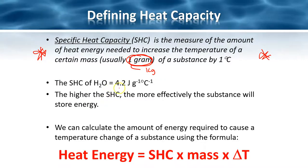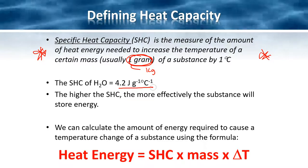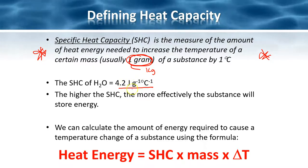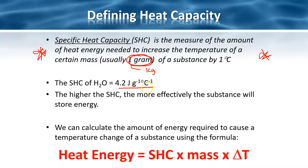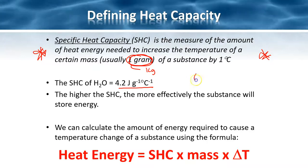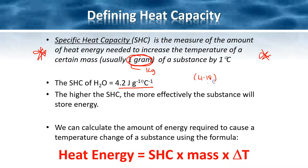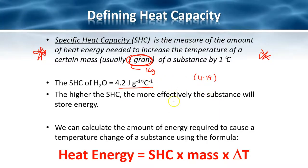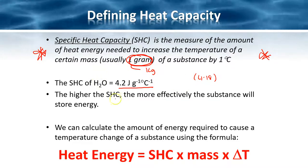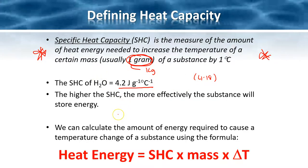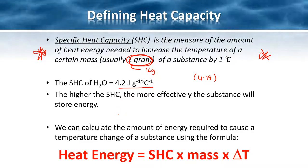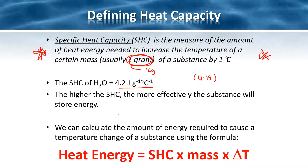For water, this is given in your data book as 4.2 joules per gram per degree C. You'll sometimes see it as 4.18, but in your data booklet it's written as 4.2. The higher the specific heat capacity, the more effectively the substance will store energy - it can take in more energy before changing temperature.